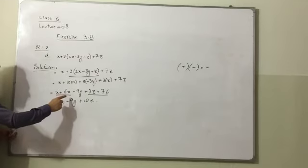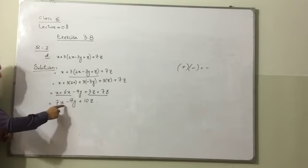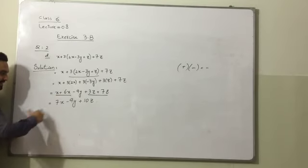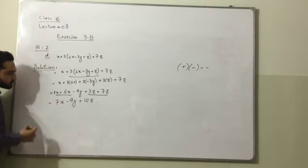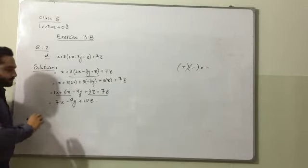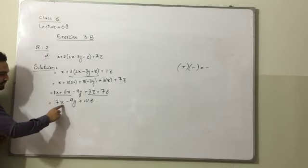x plus 6x, so when we add these terms, this will become 7x because this is 6x and this is 1x. We already know, if there is no value with variable, there must be 1. So this will become 7x.